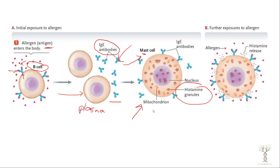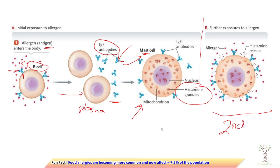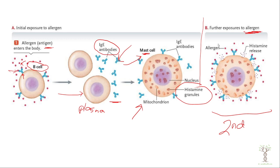On first exposure to an allergen — like eating peanuts for the first time — B cells are stimulated to make IgE antibodies that bind to mast cells, but you may have no symptoms. On the second exposure, the allergen directly binds to those mast cells already loaded with IgE antibodies, triggering a very rapid and intense release of histamine that causes the allergic symptoms.